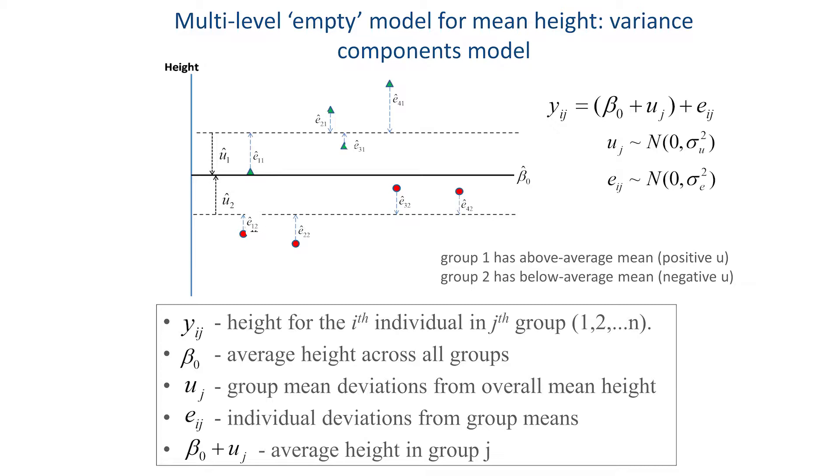Like the individual residuals in the single level model, these group residuals are assumed approximately normal with 0 mean and variance which we label σ²ᵤ. And now we also have individual residual differences around the family specific means, which we also assume are approximately normal with mean 0 and variance σ²ₑ.